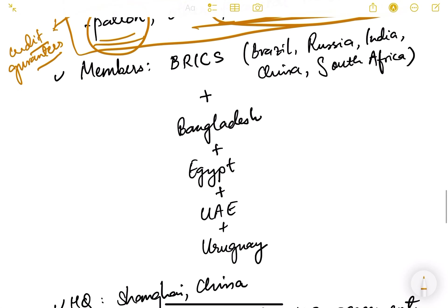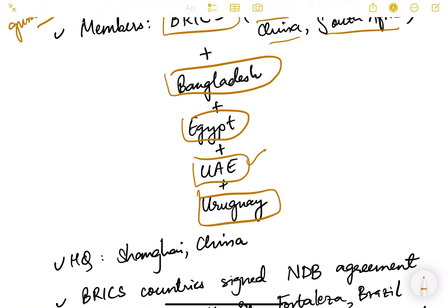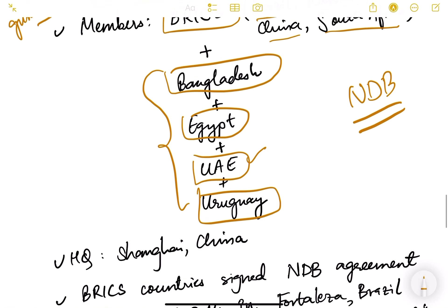The members of NDB include the BRICS countries — Brazil, Russia, India, China, and South Africa — along with Bangladesh, Egypt, UAE (United Arab Emirates), and Uruguay. As of 2023, these are the members. Notably, in 2023, the chief guest for India's Republic Day was the President of Egypt, who is also a member of NDB.